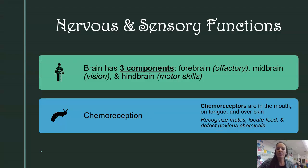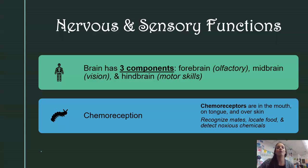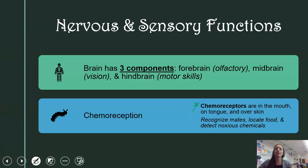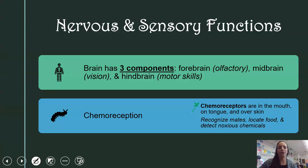In terms of their nervous and sensory systems, their brain is pretty developed for such a small organism. They have three components: a forebrain primarily for olfactory, a midbrain for vision, and a hindbrain which controls motor skills. They also have chemoreceptors in their mouth, on their tongue, and in their skin, which help them recognize chemicals — they can recognize mates, locate food, and detect poisonous chemicals.